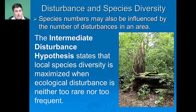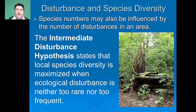If there are too few disturbances, then an ecosystem can become very stabilized and we don't get many opportunities for new organisms to work their way into that community. Whereas if there are too many disturbances, then the population never gets settled and we can never establish organisms that require a more stable environment.